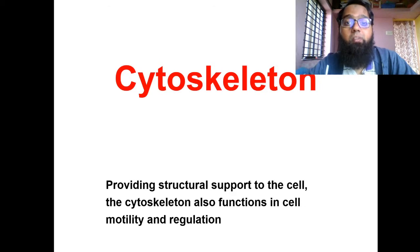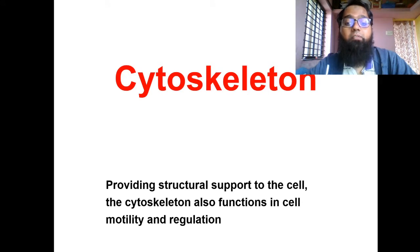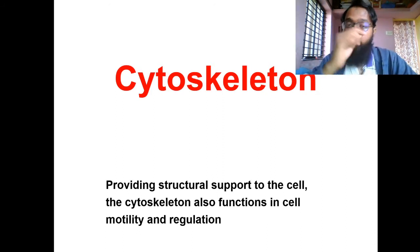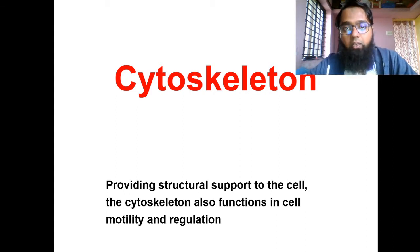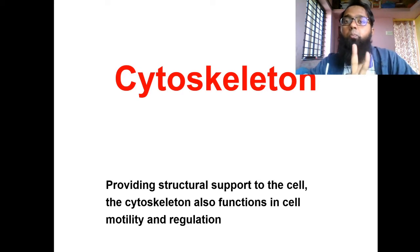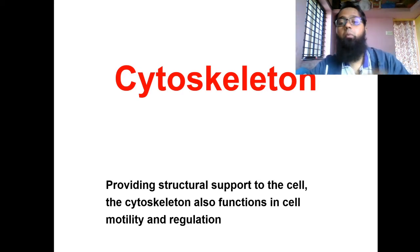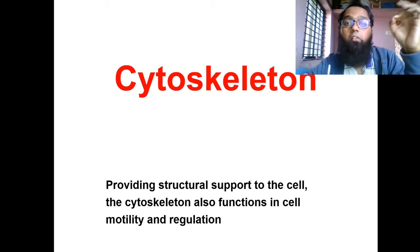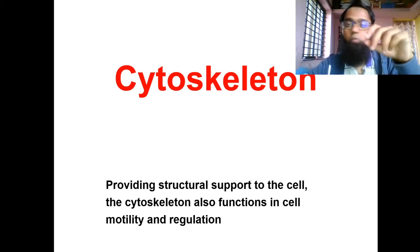The cytoskeleton provides structural support to the cell — that is the first part. The second part is that it is also important in the function of the cell, like motility and regulation, which are two very important terms. So the cytoskeleton not only forms the structure of the cell — how a cell looks and how it fits in the animal's body — but also determines what functions it performs. Both parts of the definition will be discussed in the coming slides.